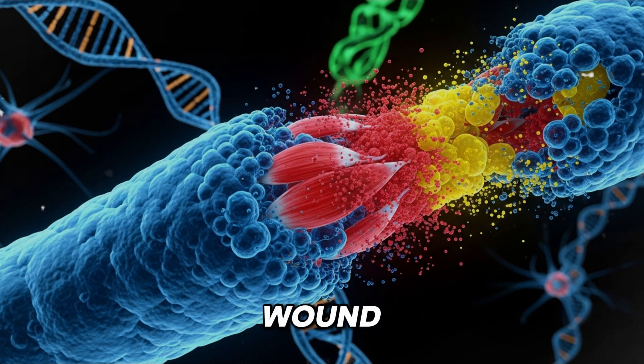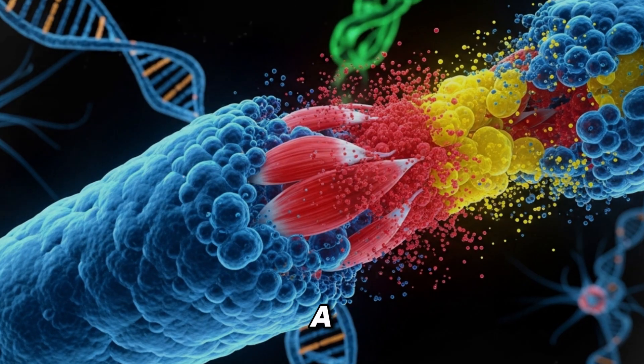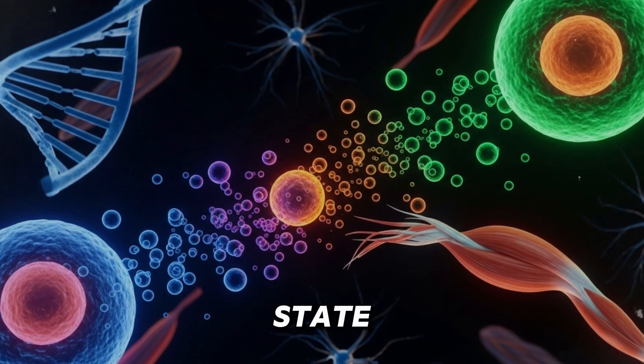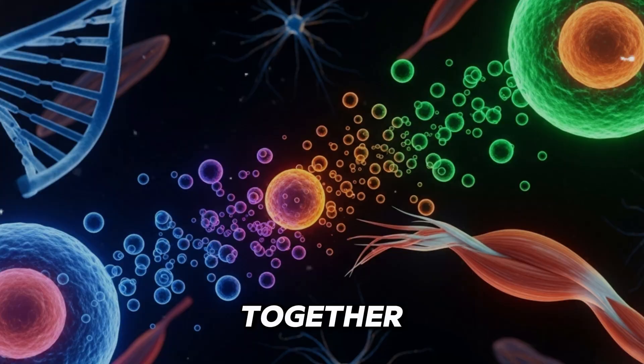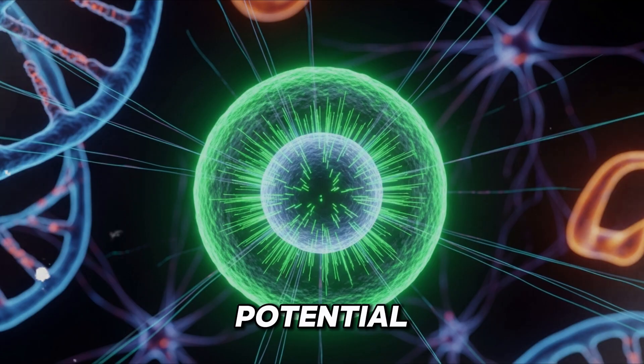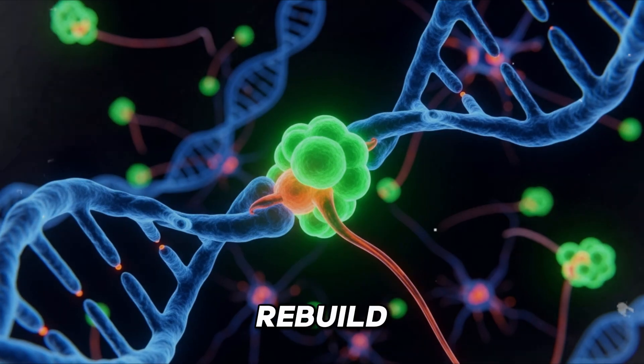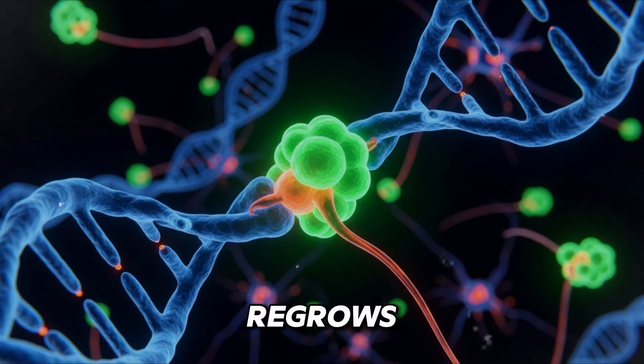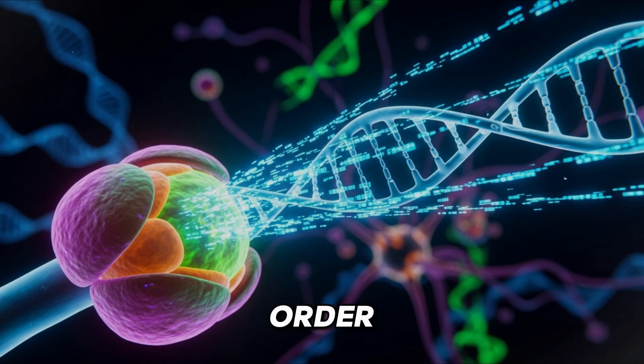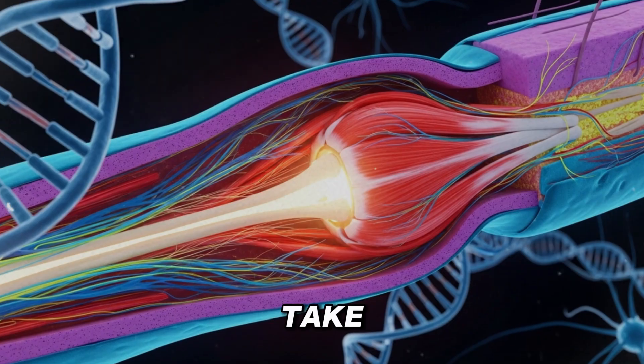The cells at the site of the wound de-differentiate. This means a skin cell, a muscle cell, and a nerve cell all forget what they are. They revert back to a pluripotent state, a blank slate stem cell. Together, they form a blastema, a small bud of pure potential. Then, this blastema, guided by ancient genetic signals, begins to rebuild the limb from scratch. It regrows the bone, then the muscle, then the nerves, then the skin, in perfect order. This process is flawless, but it is slow. It can take weeks or months.